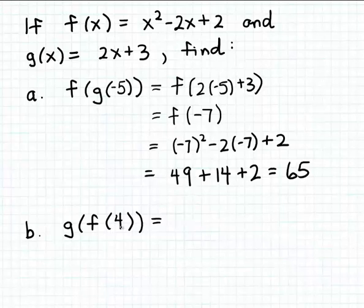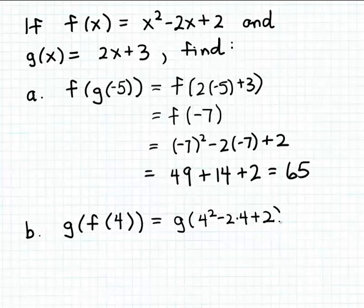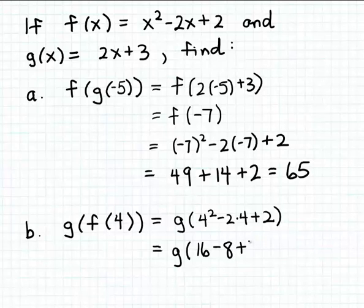Let's calculate f of four using the formula for f. F of four is four squared minus two times four plus two — substituting four for x. Four squared is sixteen, minus two times four is minus eight, plus two. Combining constants: sixteen minus eight is eight, plus two is ten.